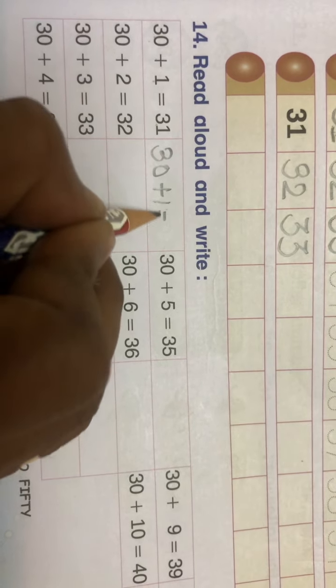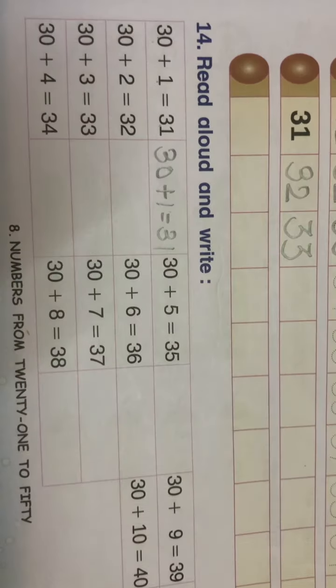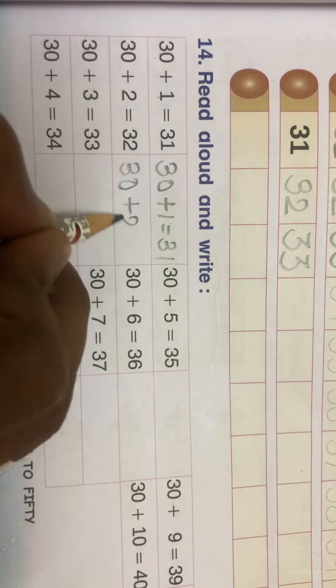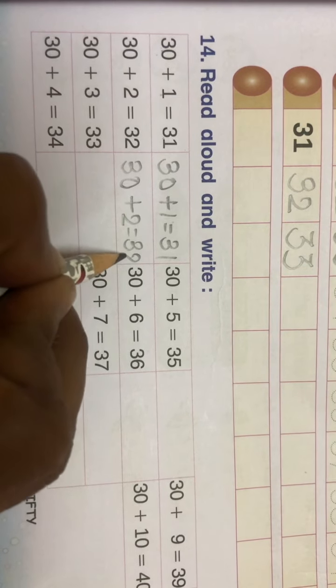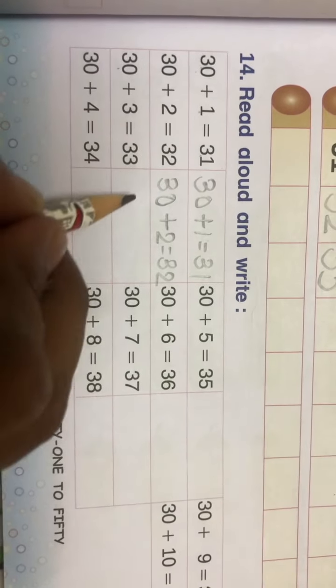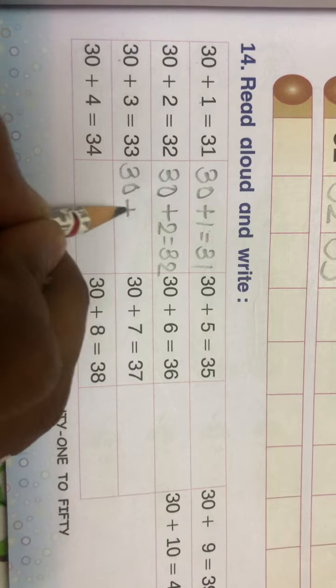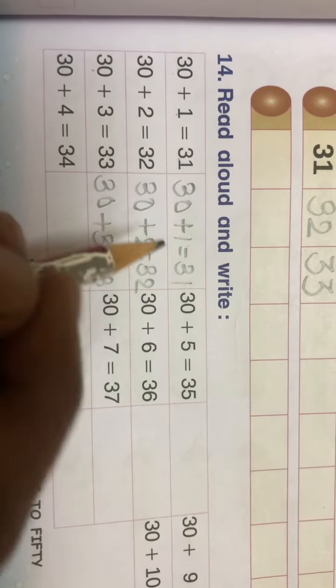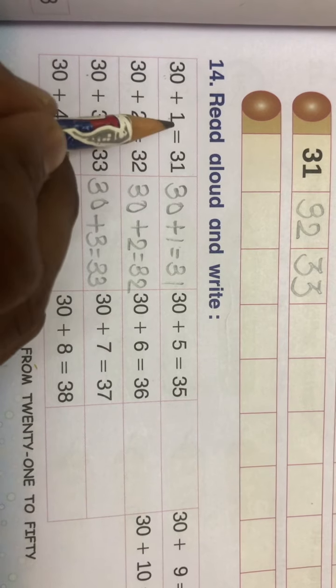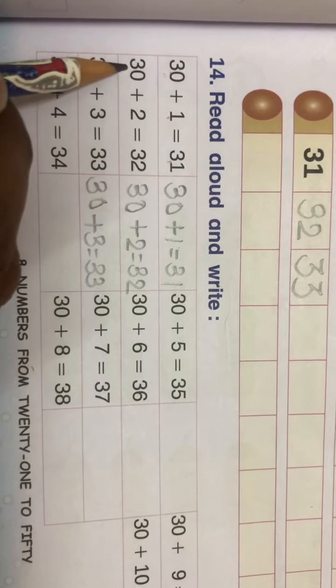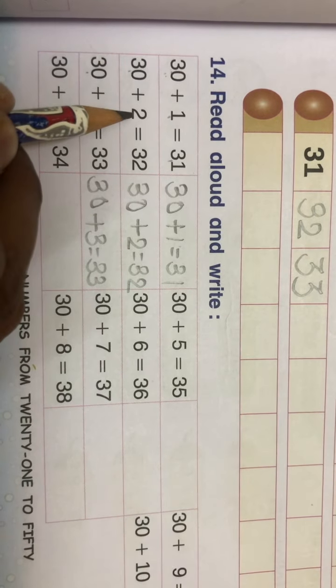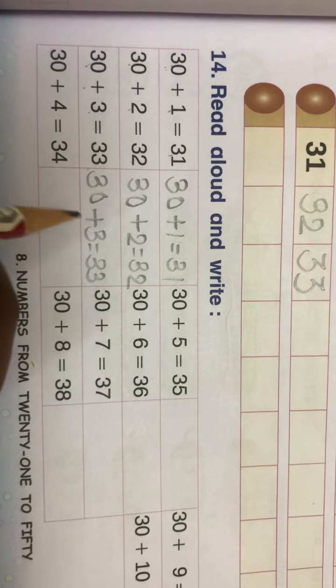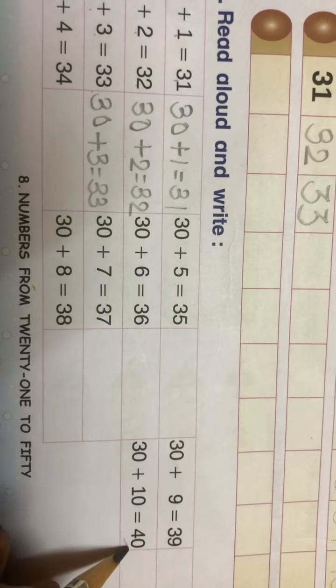plus one equals thirty-one. Same way, 30 plus 2 equals 32, 30 plus 3 equals 33. Or you can read as three tenths plus one ones equals thirty-one, three tenths plus two ones equals thirty-two, three tenths plus three ones equals thirty-three. Complete it till here.